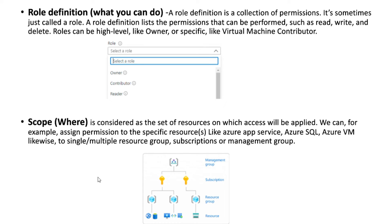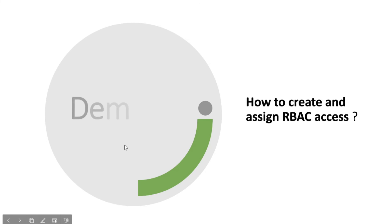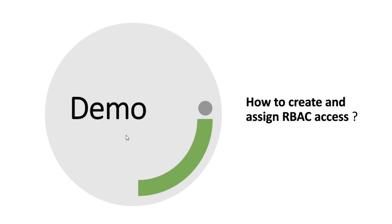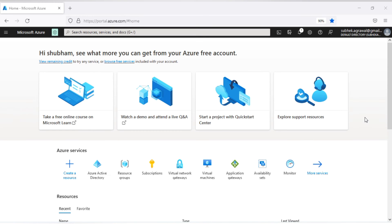Now we will see this in a demo — how to create an RBAC role and how to assign it to a specific resource or resource group. I am on the Azure portal and I will create a user account in Active Directory and assign that user to a resource or resource group.